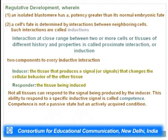The two components to every inductive interaction are the inducer — the tissue that produces a signal changing the cellular behavior of the other tissue — and the responder — the tissue being induced. Not all tissues can respond to the inducer's signal; this ability to respond to a specific inductive signal is called competence. Competence is the first of the four stages by which a pluripotent cell gives rise to a precursor cell, and it is not a passive stage but an actively acquired condition.